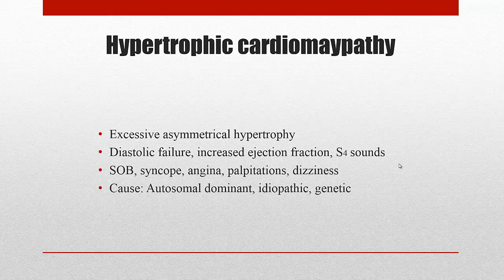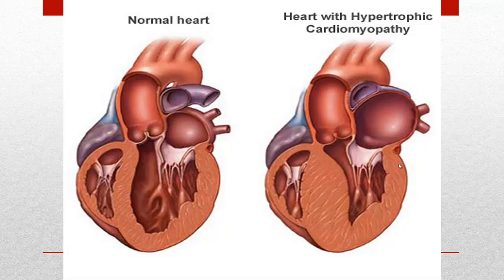The clinical signs and symptoms are very unspecific: you will have shortness of breath, syncope (essentially fainting), chest pain (angina), palpitations, and dizziness. However, this should come to your mind if you see a young person — especially an athlete — presenting with these symptoms. The causes are essentially genetic: it's autosomal dominant, meaning every generation will get it, and it can also be idiopathic.